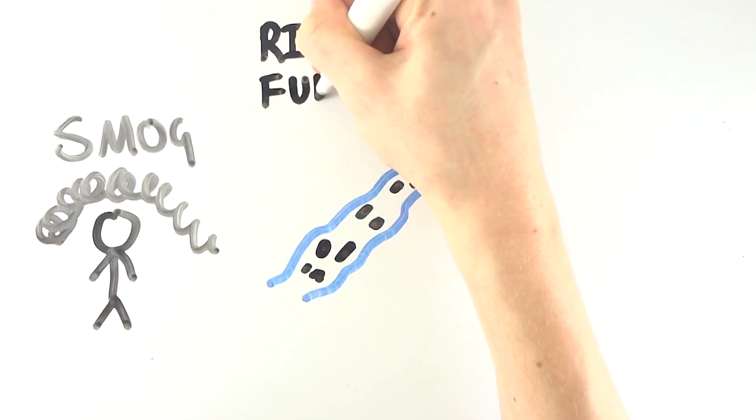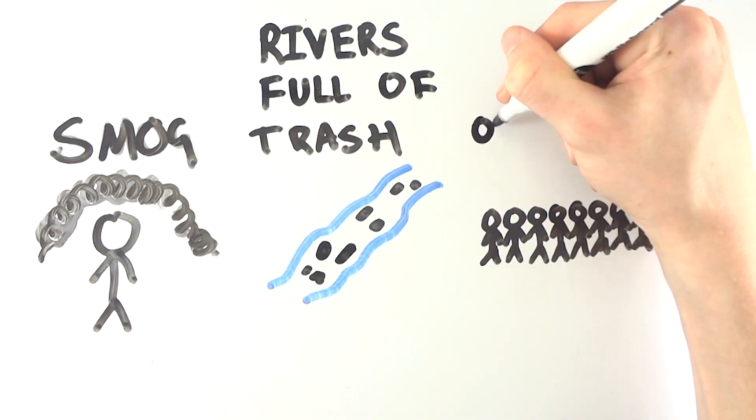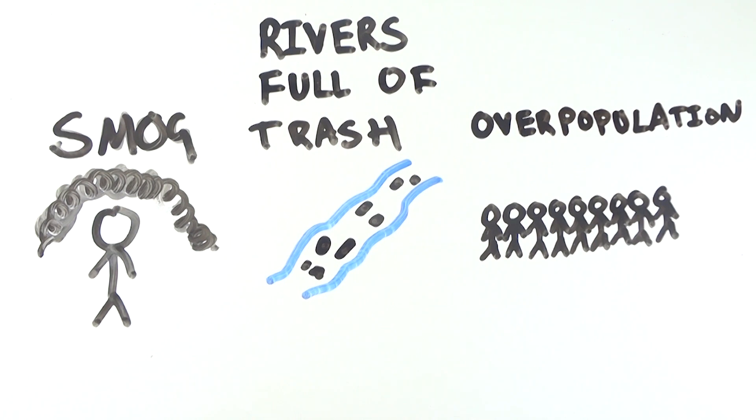From choking smog, rivers full of trash and an enormous overpopulation issue, Beijing is working through a lot of issues.